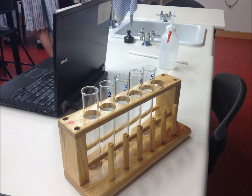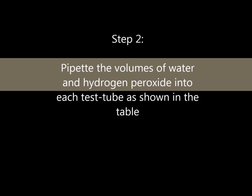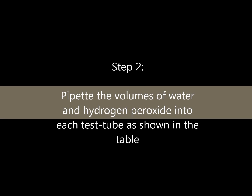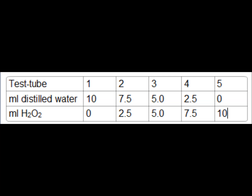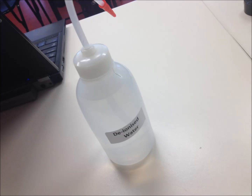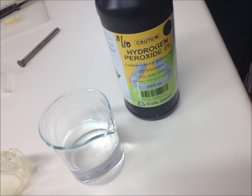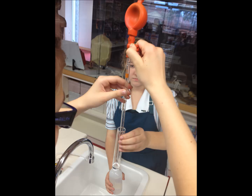Step 1: Set up five test tubes labeled 1 to 5. Step 2: Pipette the volumes of water and hydrogen peroxide into each test tube as shown in this table. Step 3: Mix the contents of each test tube.